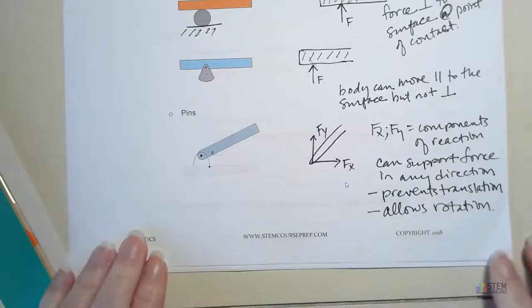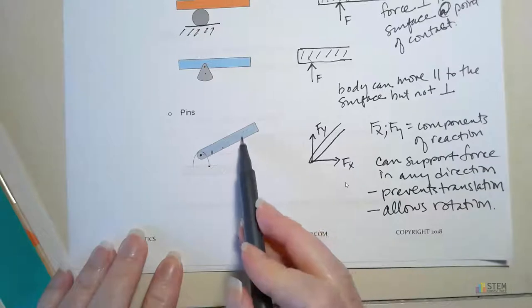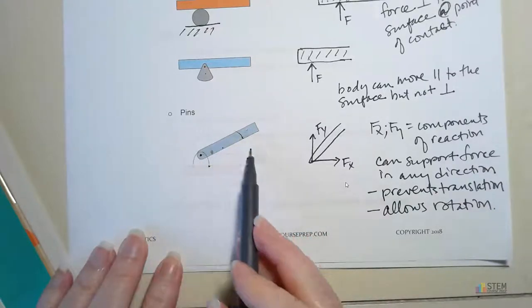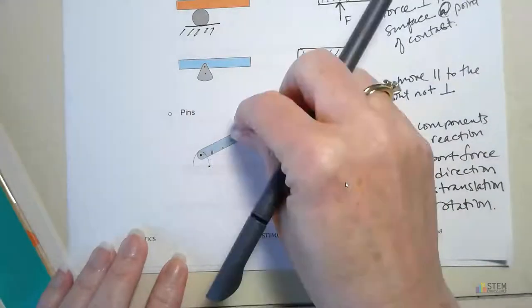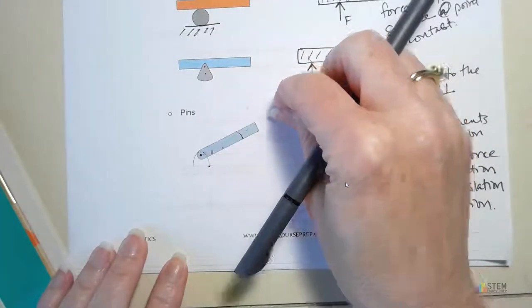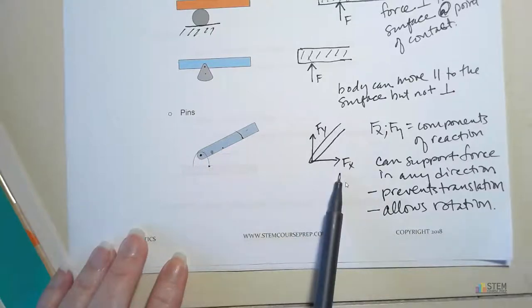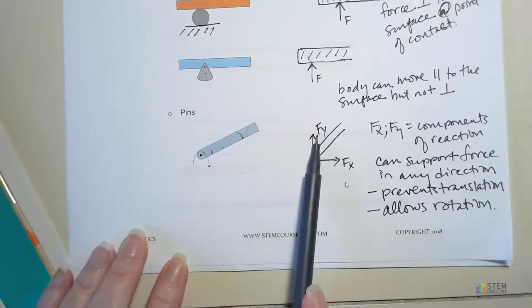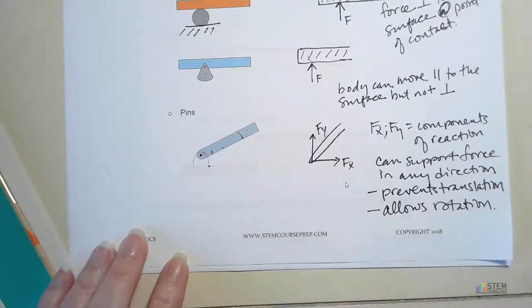So if we draw the free body diagram for a pin, the pin provides a force in the X direction and a force in the Y direction — called components of reaction. FX prevents movement in the X direction; FY prevents movement in the vertical direction. The pin can support a force in any direction — X or Y — and prevents translation in both, but allows rotation about the pin axis. Anytime we see a pin, we draw an X component and a Y component.